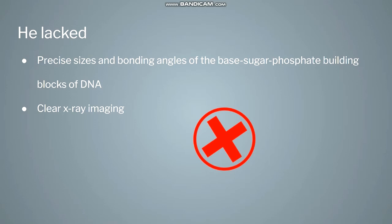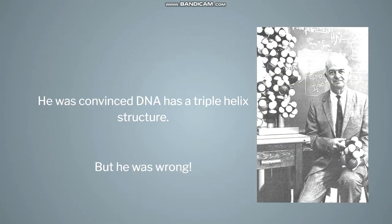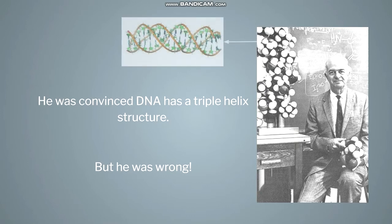But he went with what he had. After a few pages of theorizing, Pauling was convinced that DNA was in the form of a triple helix.